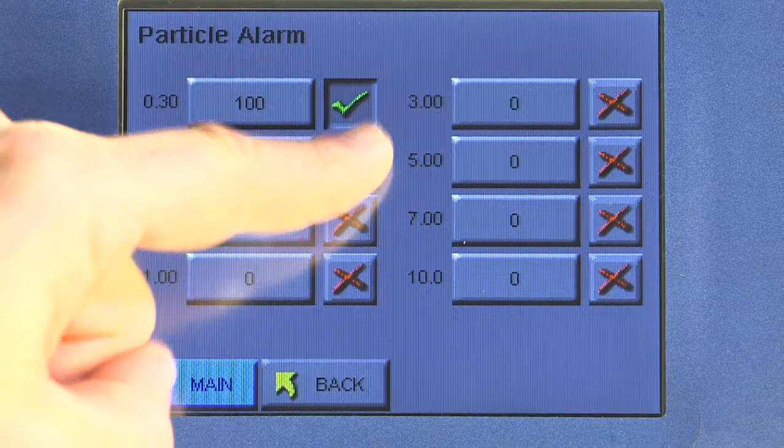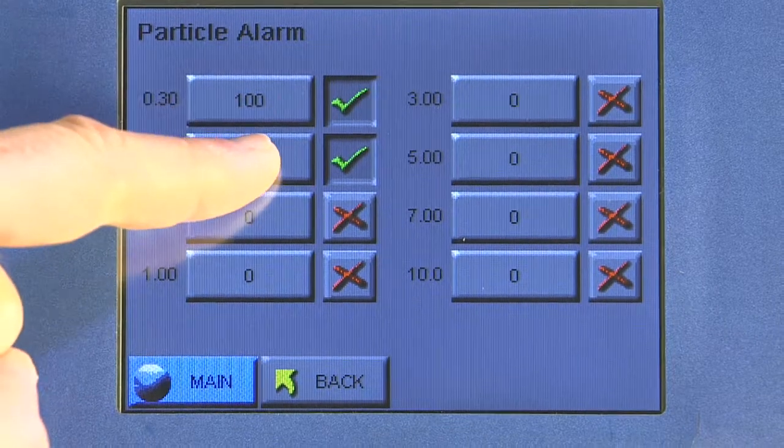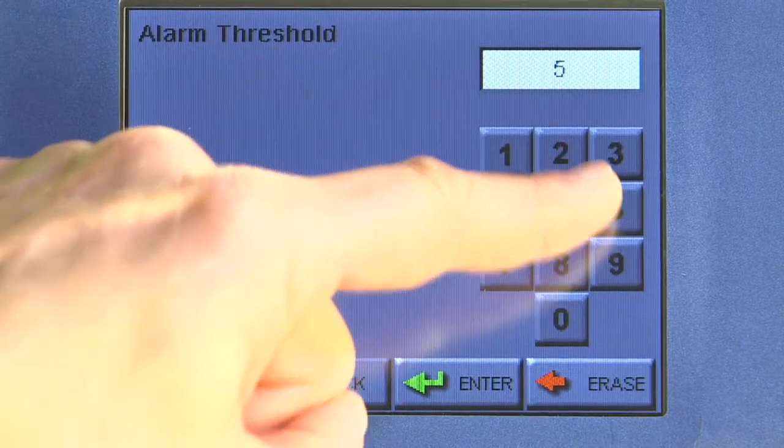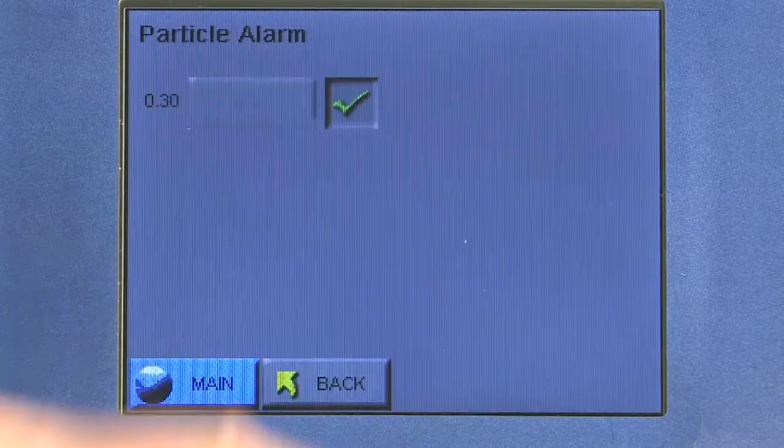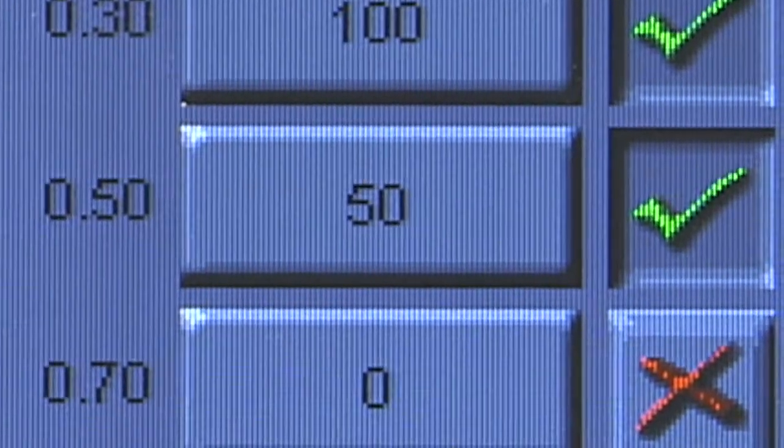Now let's say I want to set a second alarm limit at 0.5 micron. I would come here, I would enable my 0.5 micron channel. I would then select, let's say I'm going to set an alarm limit at 50 and hit enter. I have now enabled my 0.3 and 0.5 micron alarms.